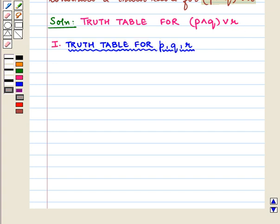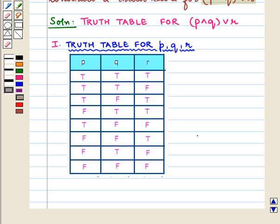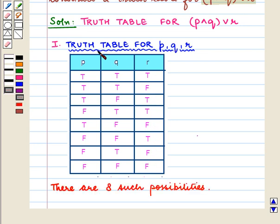To construct its table we first make the truth table for P, Q, R, taking all the possible truth values of P, Q and R. In column 1 we write the possible truth values of P, in column 2 we write the possible truth values of Q, and in column 3 we write the possible truth values of R. So here there are 8 such possibilities.